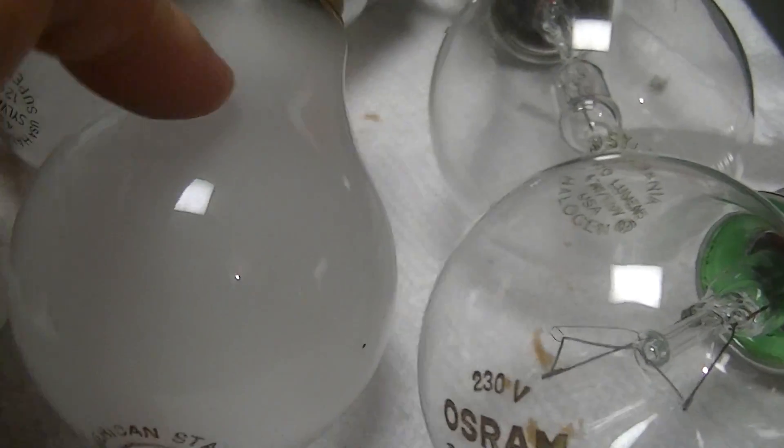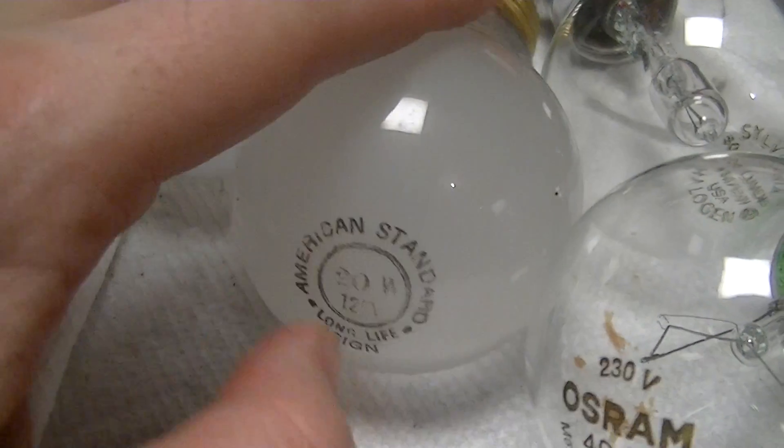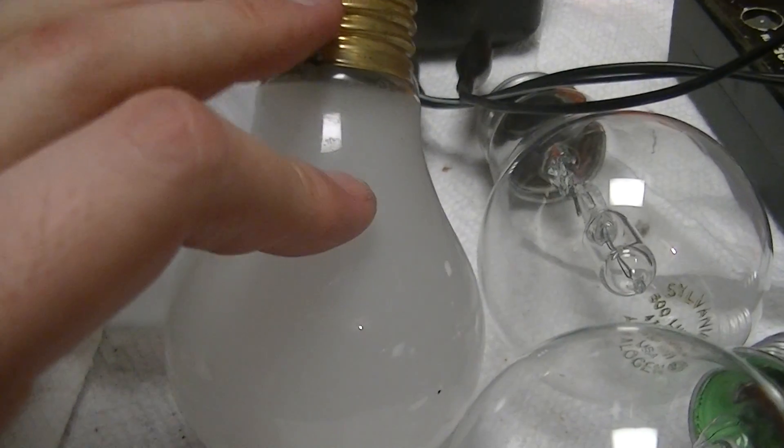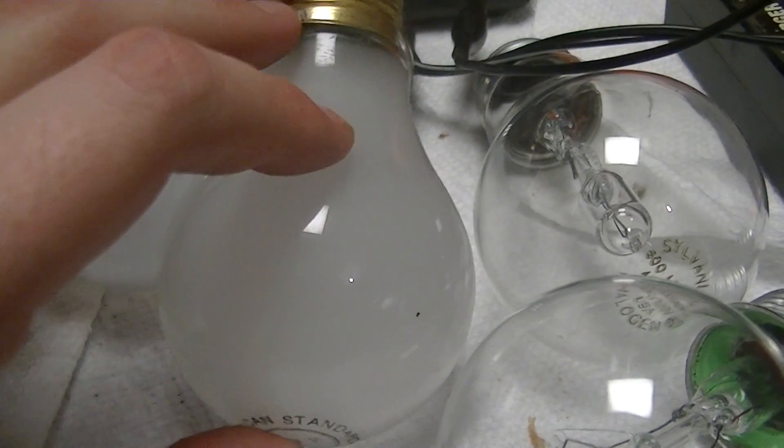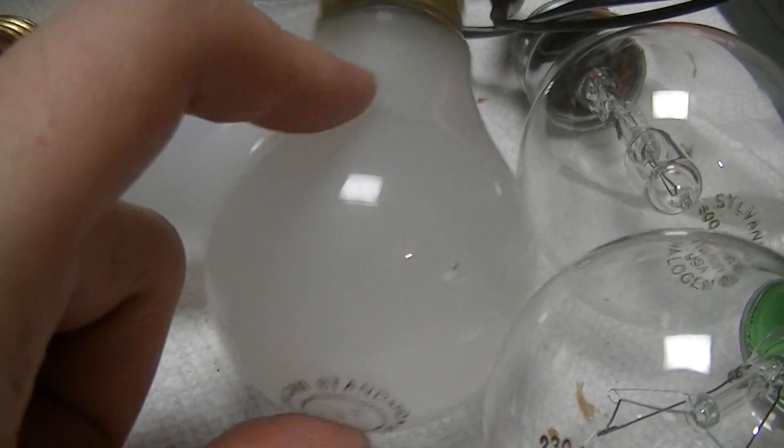This is circa 1950s American Standard 20 watt vacuum fill sign lamp, which is somewhat unusual. Lamps of this type normally have a hydrogen gas fill just for rapid and aggressive for moving message signs.